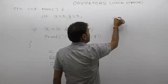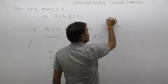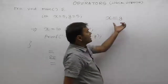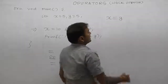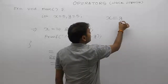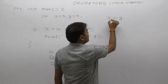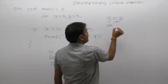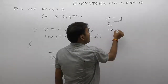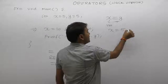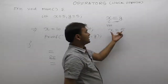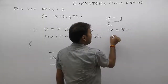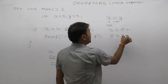Assignment is a binary operator. The mandatory condition is: the first operand for assignment must be a variable. Observe the expression x equals to 5 — first operand is a variable, so it's valid. But just reversing is not valid.